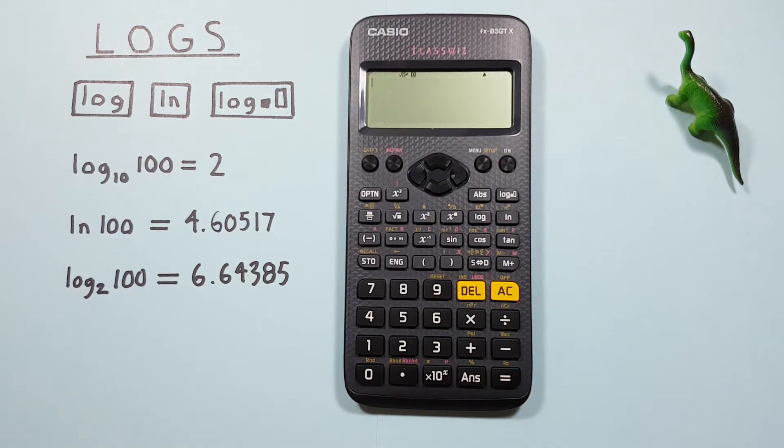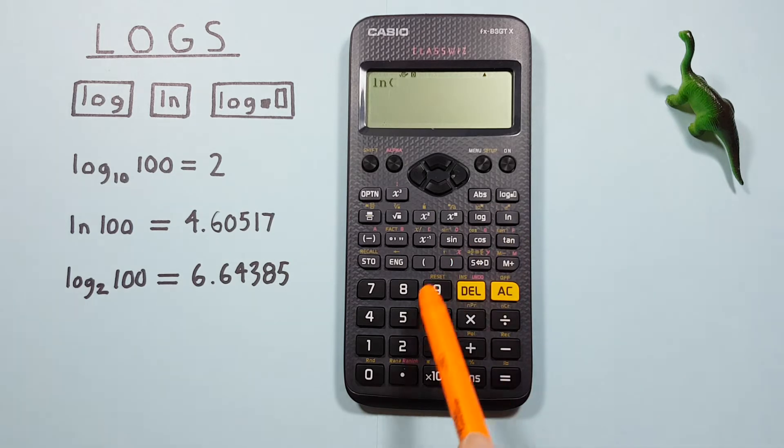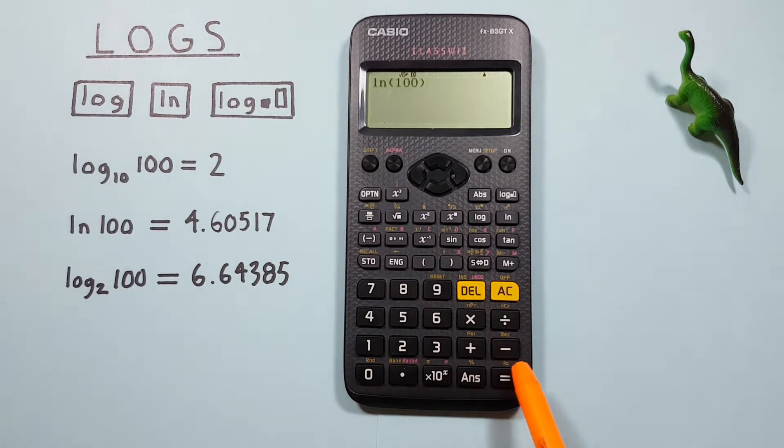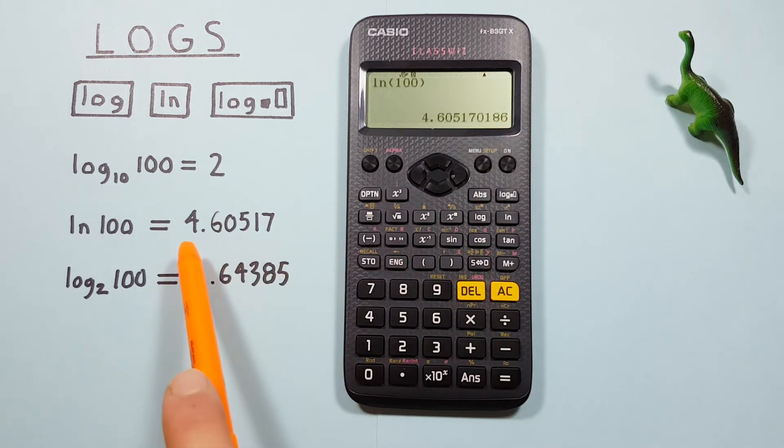Same goes for natural log, or ln. If we wanted to find the natural log of 100, all we would do is press the ln key, then enter the 100, close our bracket, and press equals, and see we get a result of 4.60517, etc. Which is correct.